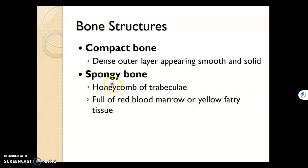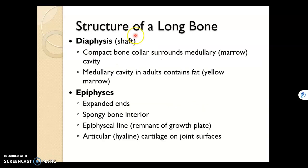Sometimes that spongy bone is full of red bone marrow, sometimes of yellow bone marrow, which is fatty tissue. Recall that a long bone is longer than it is wide, and it has an epiphysis and diaphysis. The diaphysis is the shaft.